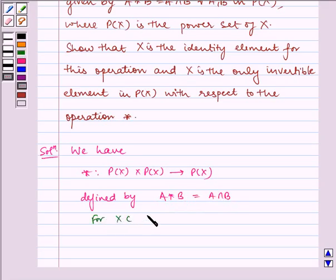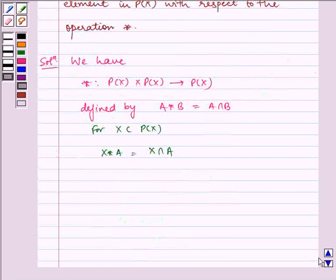For X belongs to P(X), X * A = X ∩ A = A for all A. Thus, X is the identity element.